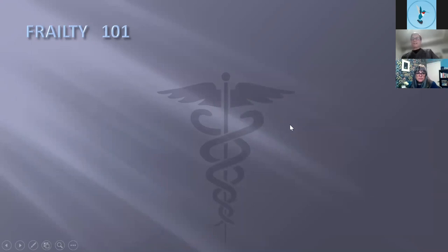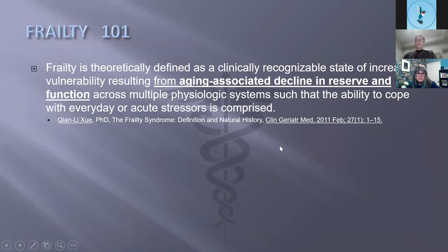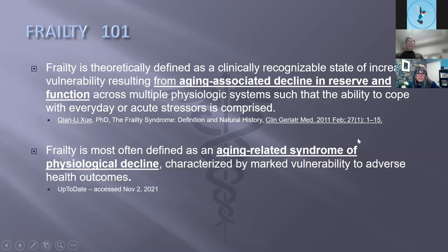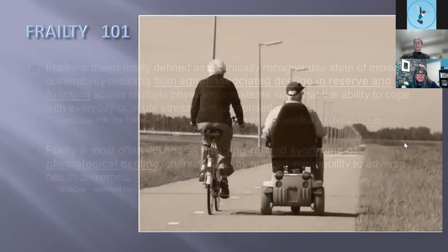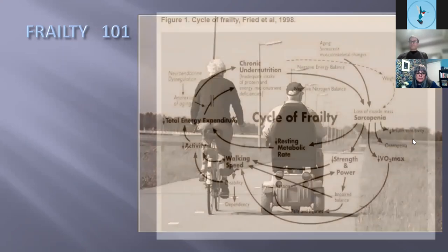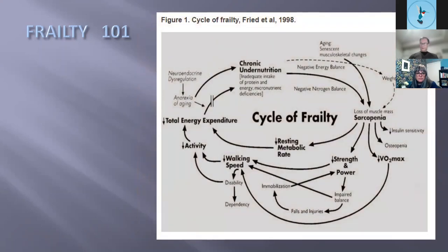Frailty is a state of increased vulnerability that results from age-associated decline in reserve and function across multiple organ systems — your heart, lungs, kidneys, and so on — such that your ability to cope with stressors is compromised. It's often looked at as an age-related syndrome, but here you have two people of similar age where one is frail and the other would not be considered frail — so it's more nuanced than just age.